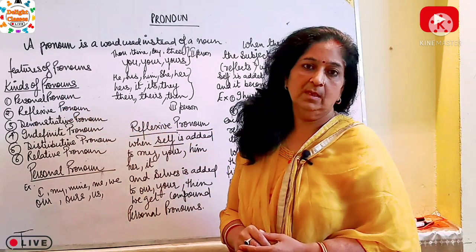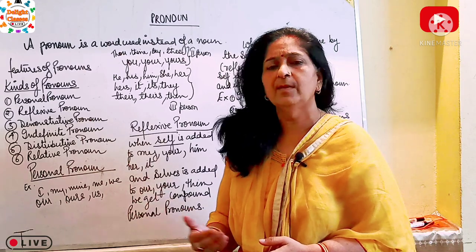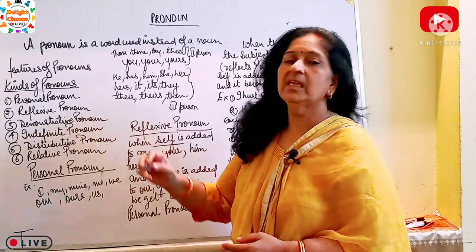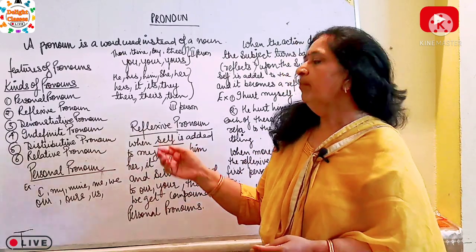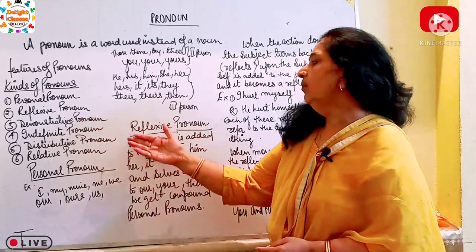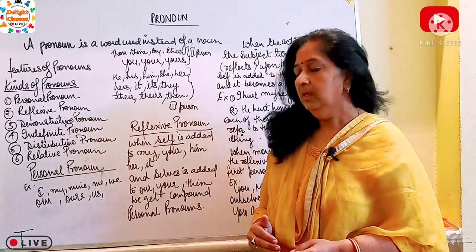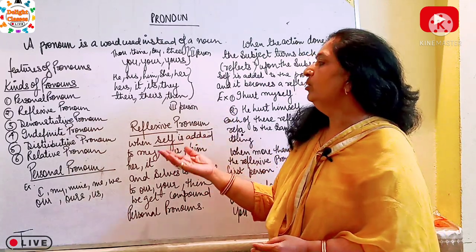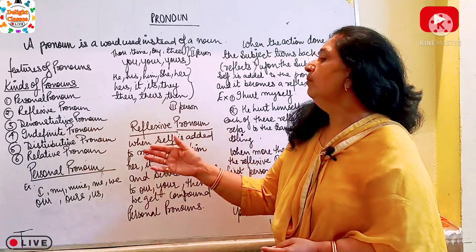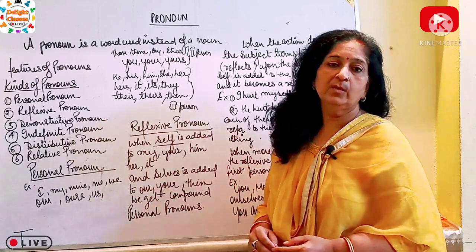Kinds of pronouns — pronouns are of many kinds. We are going to discuss here about six types of pronouns: number one, personal pronoun; number two, reflexive pronoun; number three, demonstrative pronoun; number four, indefinite pronoun; number five, distributive pronoun; and number six, relative pronoun. Let's start with personal pronoun.